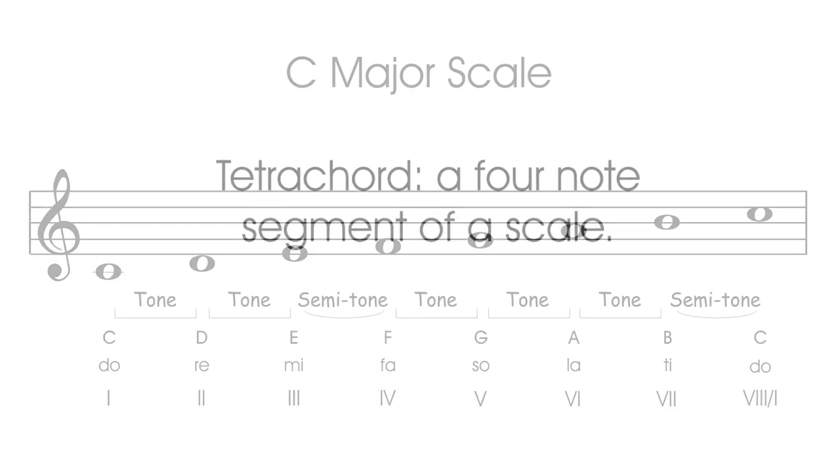In a previous lesson we analyzed the C major scale and found that it is constructed from a specific series of tones and semitones. If we draw an imaginary line in the middle of the scale, we will notice that there are two identical patterns of tone tone semitone, with a tone connecting the two.